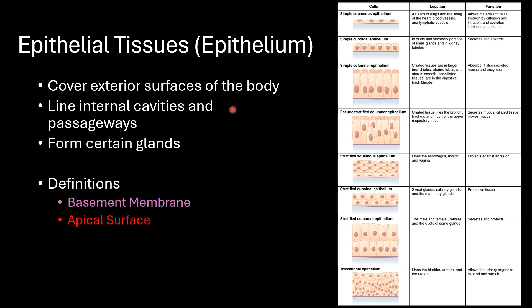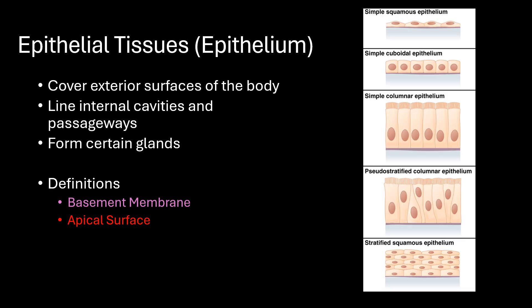A couple of terms you'll hear throughout this video are the basement membrane and the apical surface. The basement membrane can also be referred to as the basal surface. It is the edge at which the cells are in contact with other tissues below it — therefore it is the base and we'll use that as our reference point. On the bottom image, it's that purple line right there; below it we would see other connective tissues. In contrast, on the top we have our apical surface — it's our free edge and it's not in direct contact with other cells.